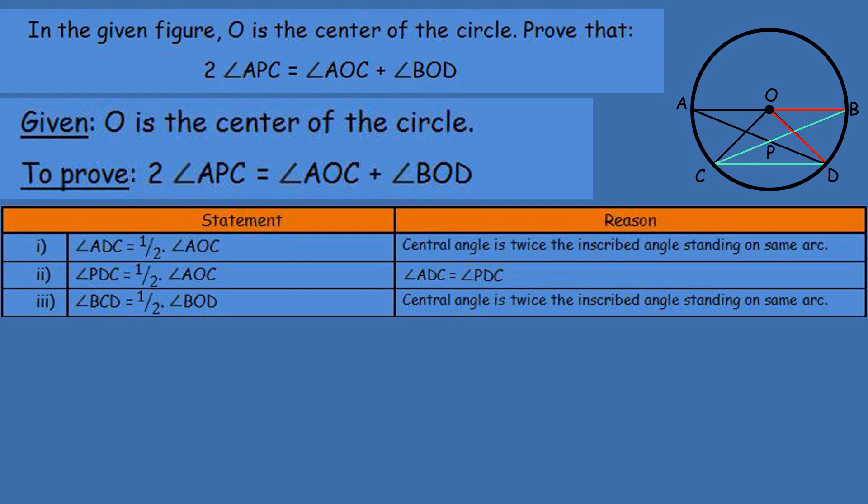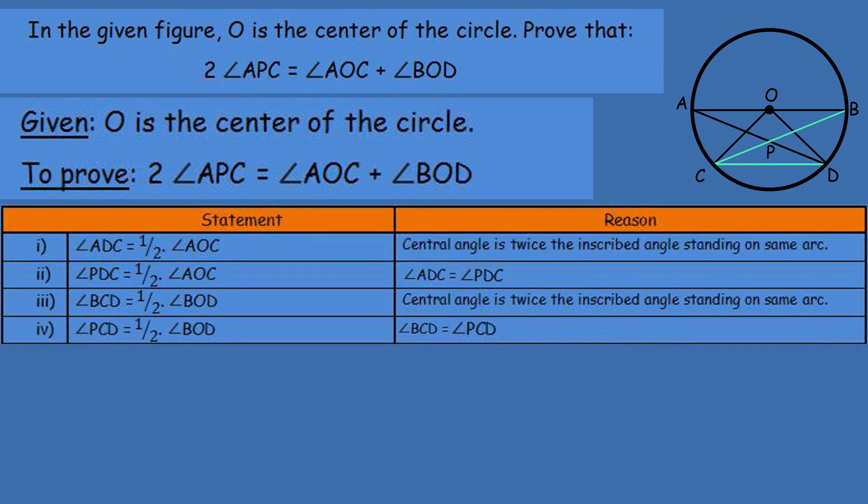So, I mean, third statement. Central angle is twice the inscribed angle standing on same arc. Angle BCD, I mean, angle PCD, because angle BCD or angle PCD represent the same angle. So third statement, angle BCD, we substitute with angle PCD, so we can write angle PCD is equal to half times of angle BOD. Reason being, angle BCD is equal to angle PCD.